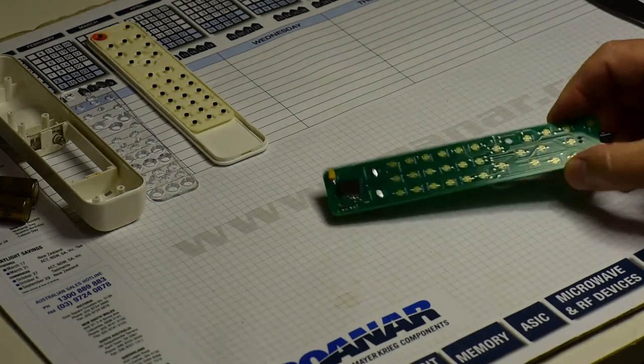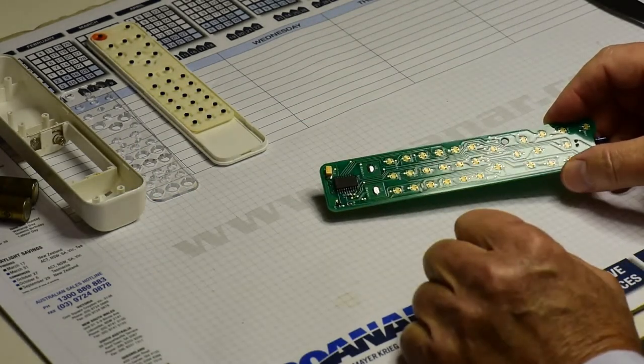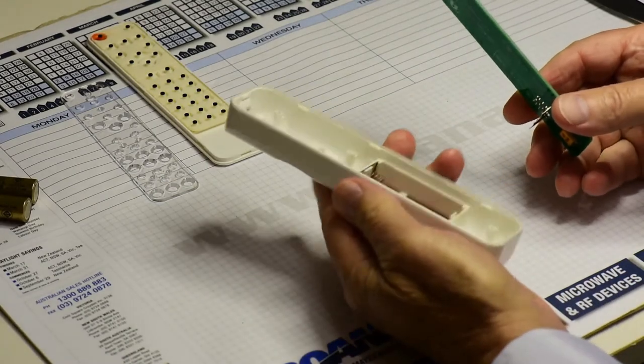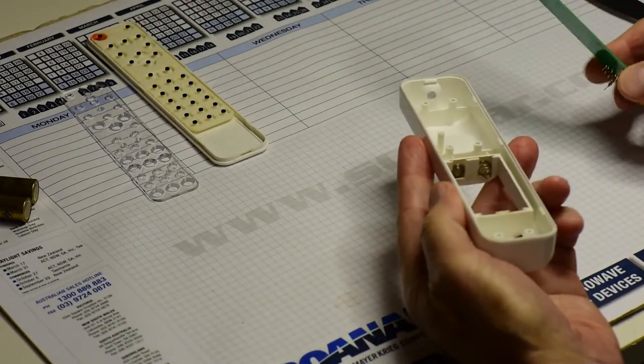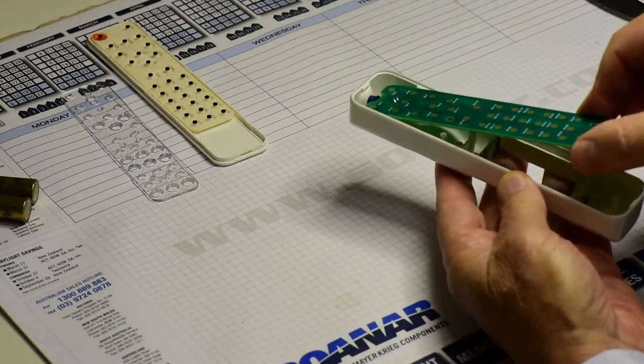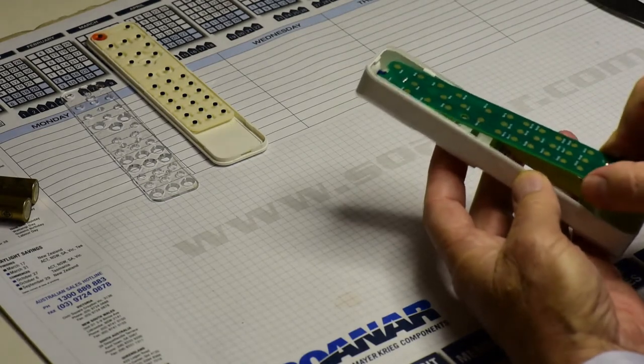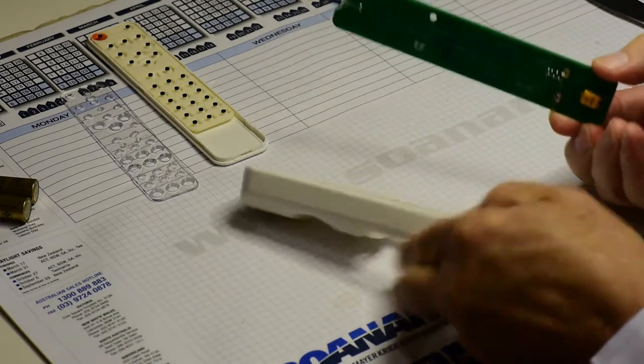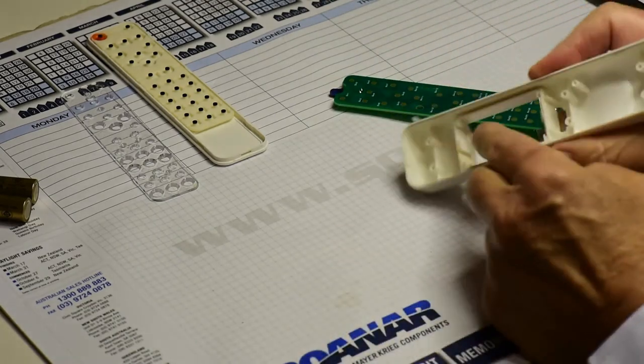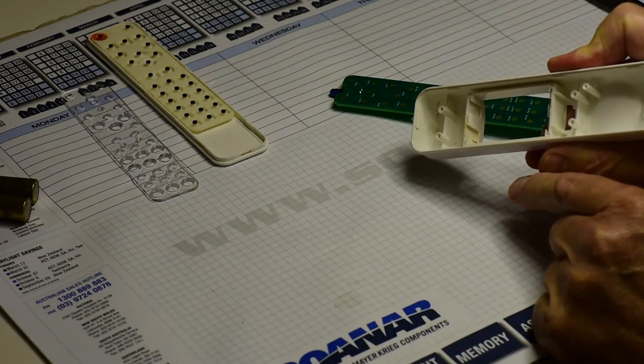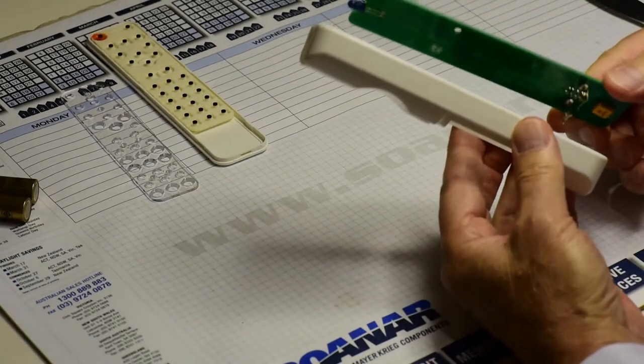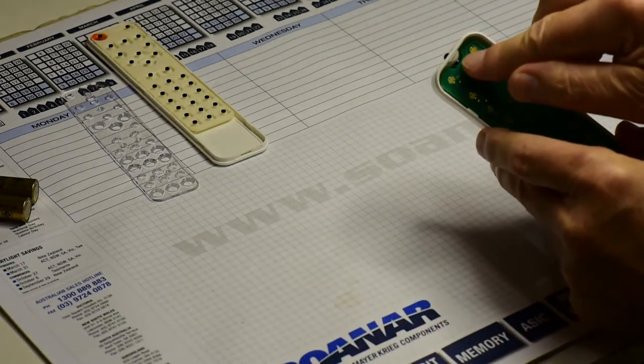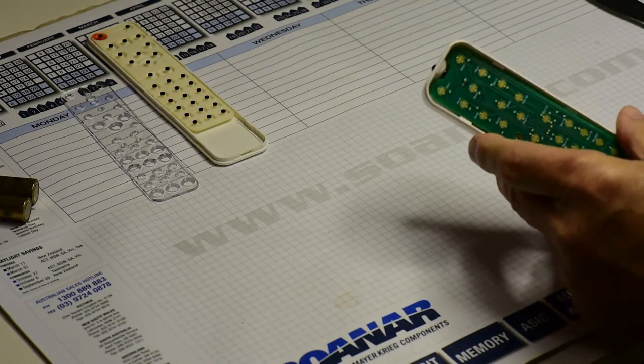Okay, so now the board is assembled with the IC and the flux has been cleaned off. All that remains is to pop it back into the case. Notice the hole for the LED. So the first thing is to slip the LED into that hole, like so.